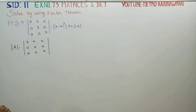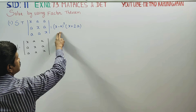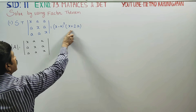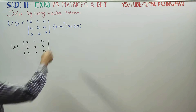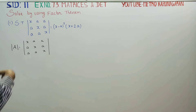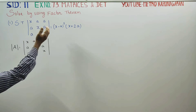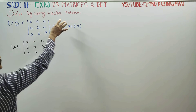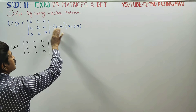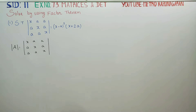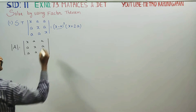If you have factors (x minus a) whole square and (x plus 2a), these are the values given by the factor theorem. These are the values of the answer. We will verify this using the factor theorem.